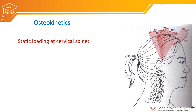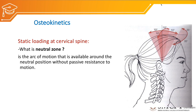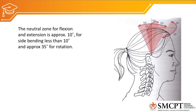Coming to osteokinetics — that is, static loading at the cervical spine, or the forces loading the bones of the cervical column during the neutral zone. Before understanding the amount of force loaded on the cervical vertebral column, let us understand what the neutral zone is. It is the arc of motion available around the neutral position without passive resistance to motion.